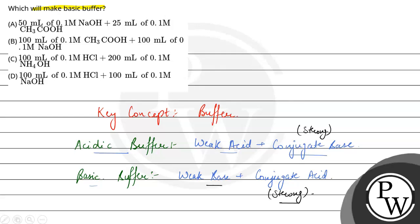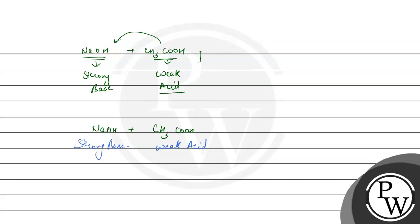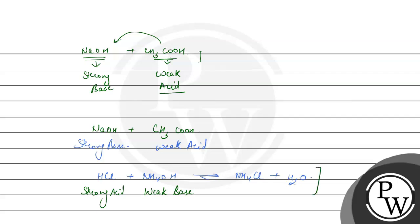Option C: HCl plus NH4OH. When we take them together, HCl and NH4OH will produce NH4Cl plus ammonia (NH3). So we have HCl as strong acid and NH4OH as weak base. A basic buffer is formed by strong acid and weak base — so this combination will form a basic buffer.